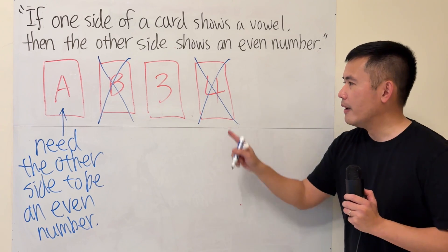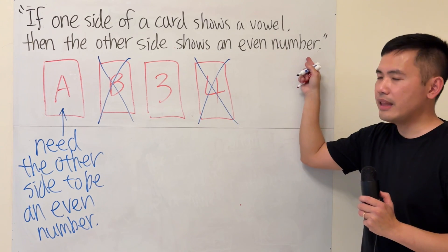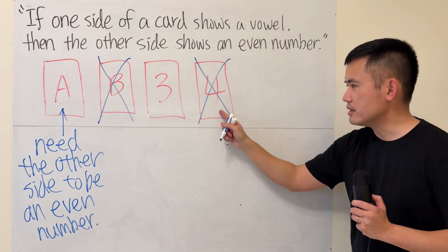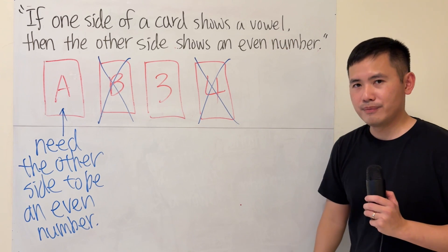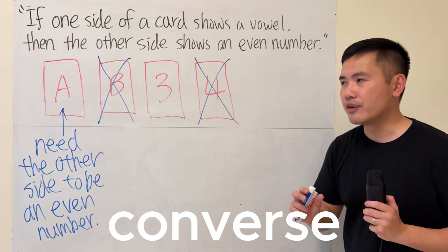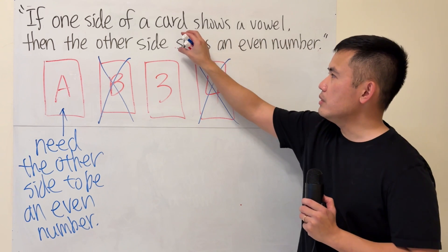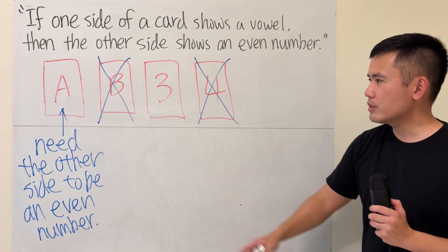Why? Well, let's think about it. This right here is just the conclusion, it shows you an even number. But does this guarantee that the other side has to be a vowel? No, it doesn't. This is the idea of a converse. If this is true, in fact, the original, this right here, it doesn't have to be true.